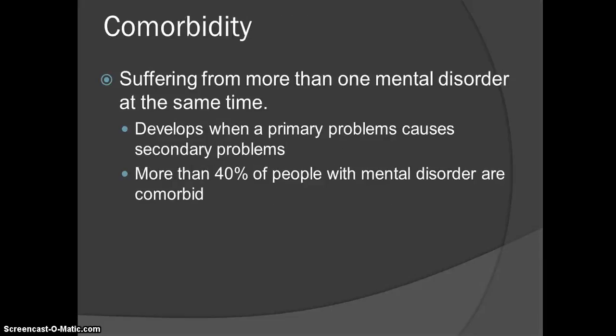Comorbidity is when an individual suffers from more than one mental disorder at the same time. It develops when primary problems start to cause secondary problems. More than 40% of people with mental disorders are actually comorbid, meaning they have more than one mental disorder.